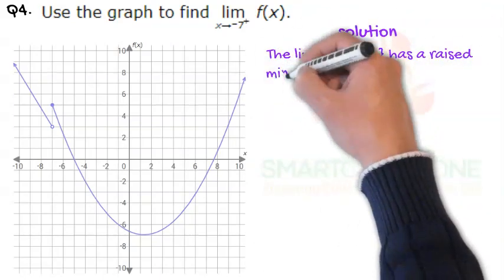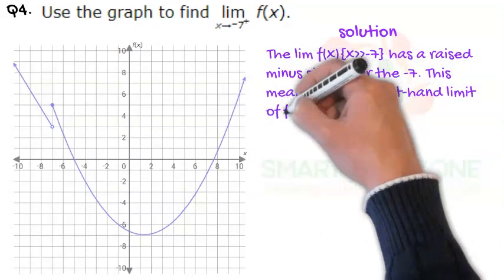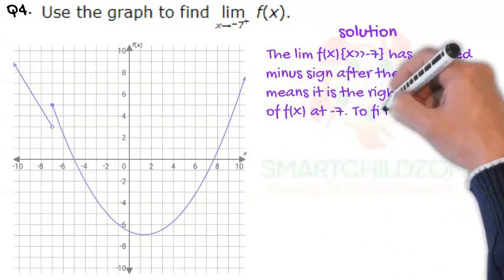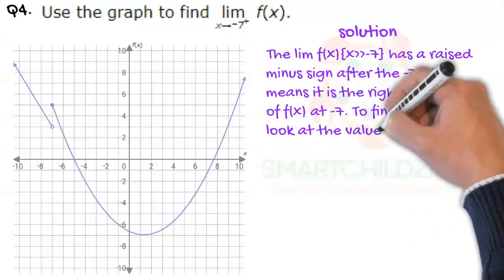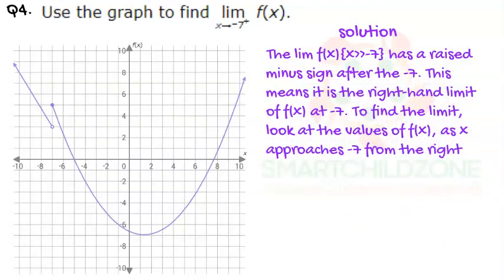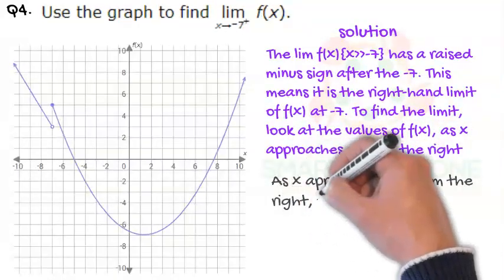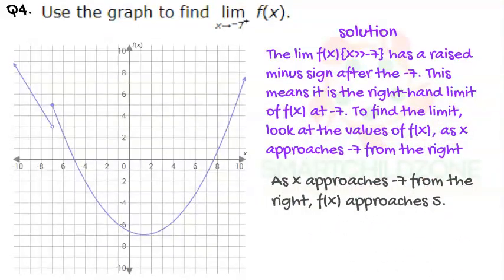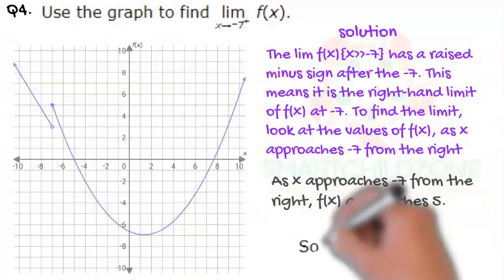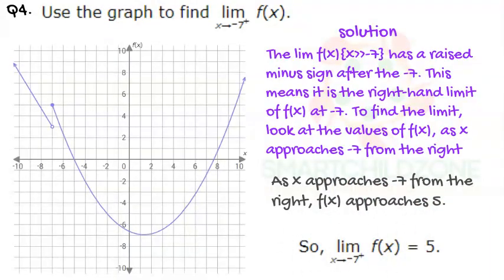The expression has a raised plus sign after minus seven, meaning it is the right-hand limit of f(x) at minus seven. To find the limit, look at the values of f(x) as x approaches minus seven from the right. As x approaches minus seven from the right, f(x) approaches five. So the right-hand limit of f(x) as x approaches minus seven is five.